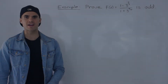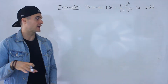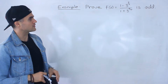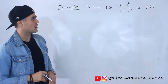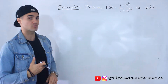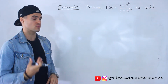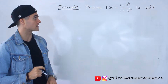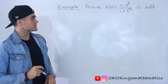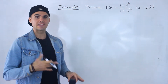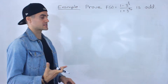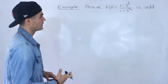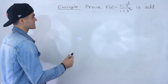Welcome back. In this video we're going to prove that this function is odd: f(x) = (1 - 3^(2/x)) / (1 + 3^(2/x)). This question is going to be a little unique — the algebra is going to be unique. We haven't dealt with a function like this yet when dealing with symmetry.